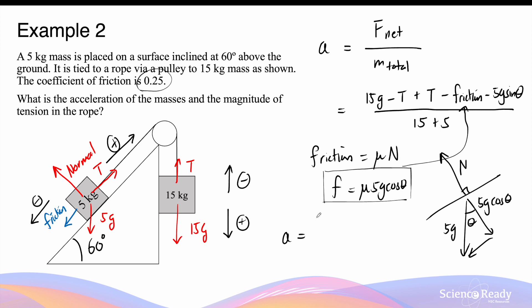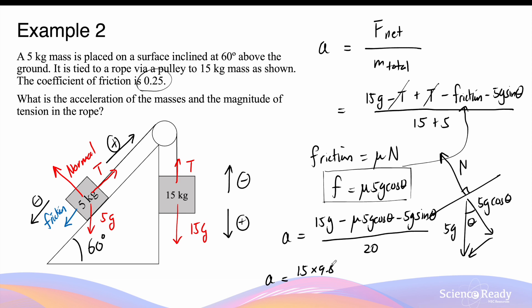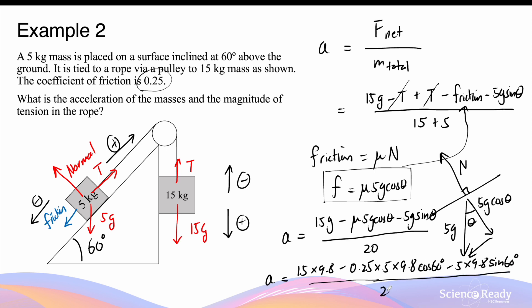We can substitute this into the expression for acceleration. The acceleration equals 15g, the two tension forces cancel out, minus the friction which is mu times 5g cosine theta, minus 5g sine theta, all divided by 20. So acceleration equals 15 times 9.8 minus 0.25 times 5 times 9.8 times cosine 60° minus 5 times 9.8 times sine 60°, divided by 20. This gives an acceleration value of 4.92 meters per second squared. This means the 15kg mass is accelerating downward at 4.92 m/s², and the 5kg mass is accelerating up the slope also at 4.92 m/s².